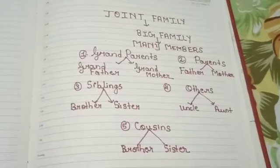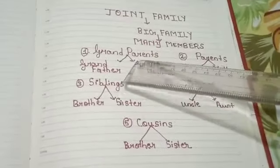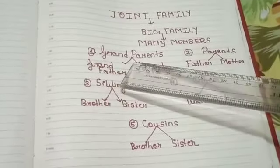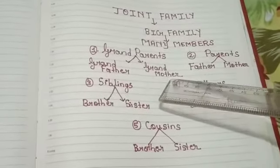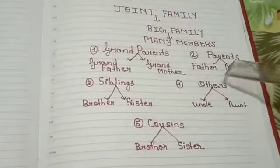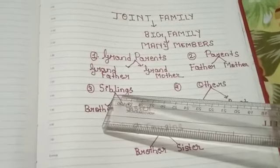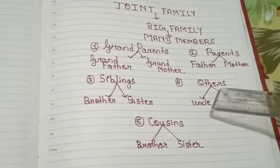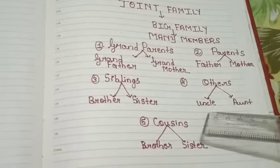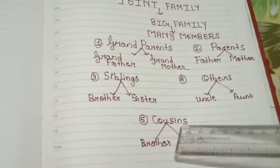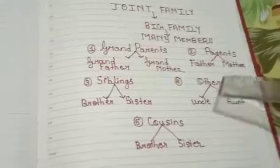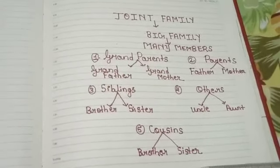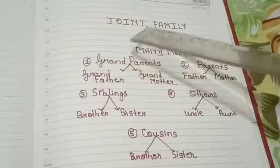Joint family means a big family where there are many members. The joint family members can be grandparents — that is our grandfather or grandmother — parents, that is our father and mother, and siblings, that is our real brother or sister. Other family members may include uncle and aunt, and there might be our cousins. Cousins means the children of our uncle and aunt, so cousins may be like our brother or sister. There are many members in a joint family.